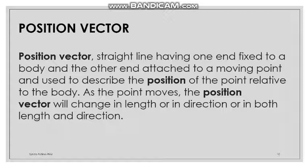A position vector is a straight line having one fixed end. One end is fixed and the other end is a moving point. We use direction to show the position vector — it has both a length and a direction.